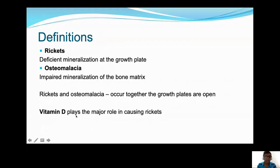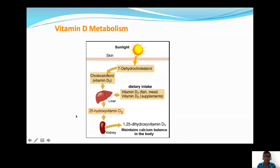Vitamin D plays the major role in causing rickets. To remind you of vitamin D metabolism: the main source of vitamin D in our setup is sunlight. UV rays acting on dehydrocholesterol in the skin form cholecalciferol, that is vitamin D3. In the liver, there is 25-hydroxylation of this cholecalciferol to form 25-hydroxyvitamin D, which enters the kidney where one-alpha hydroxylation produces 1,25-dihydroxyvitamin D — the most active form of the vitamin D hormone.